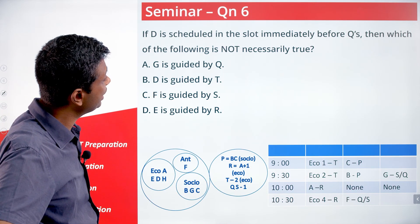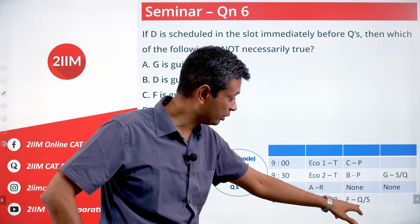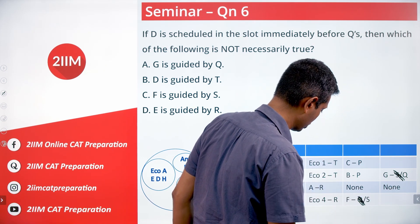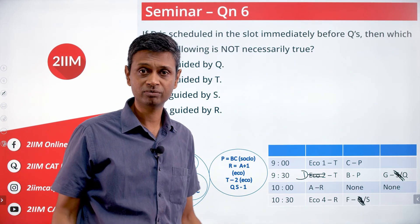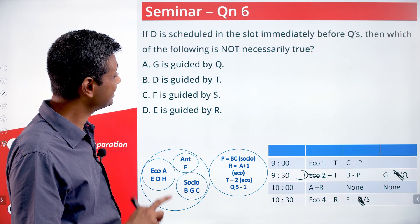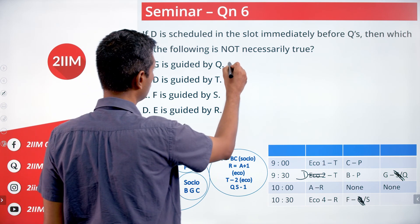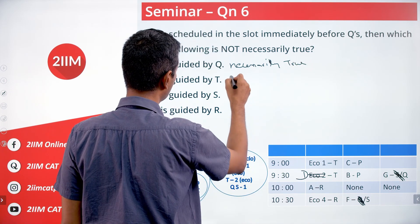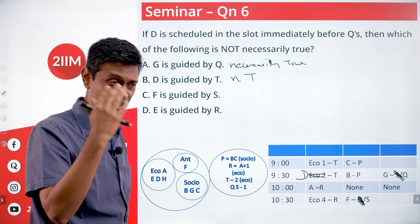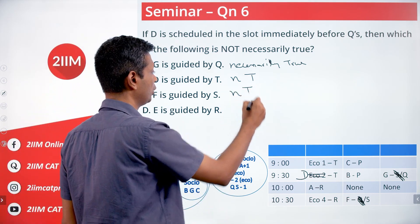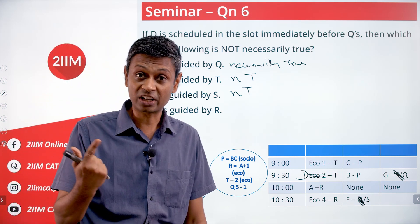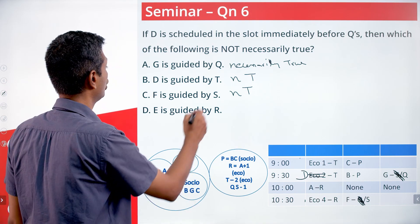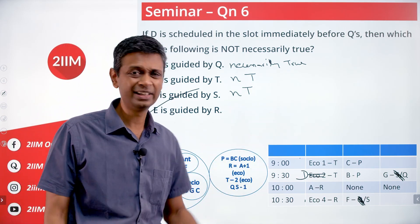If D is scheduled in the slot immediately before Q's student, then the 9:30 slot must be Q's — so G is guided by Q and F is guided by S. The student in slot one is D, guided by T. Which of the following is not necessarily true? G guided by Q — necessarily true. D guided by T — necessarily true. F guided by S — necessarily true. E guided by R — not necessarily true, because E and H are remaining and could go in either slot one or two, so E could be guided by T and H by R. That is the answer we are looking for.